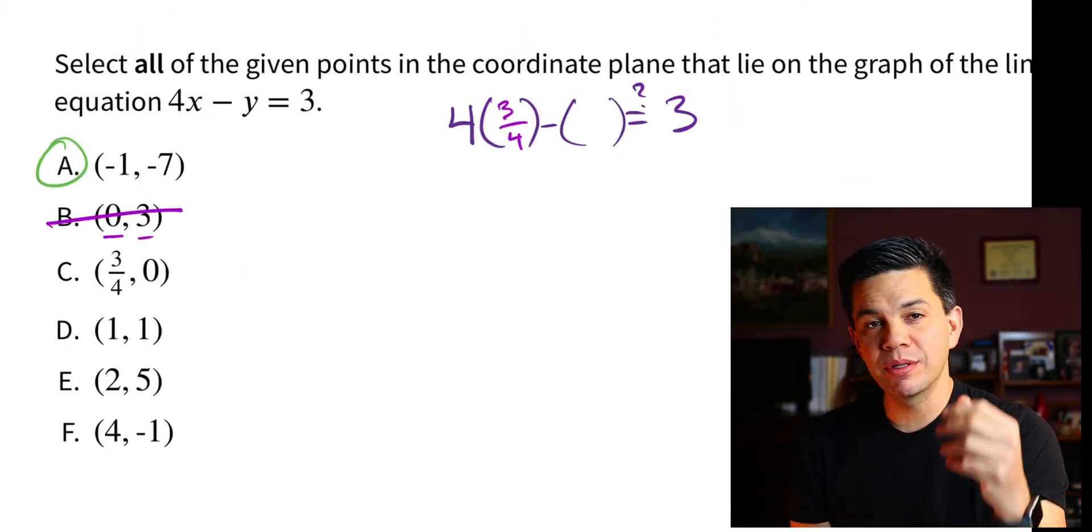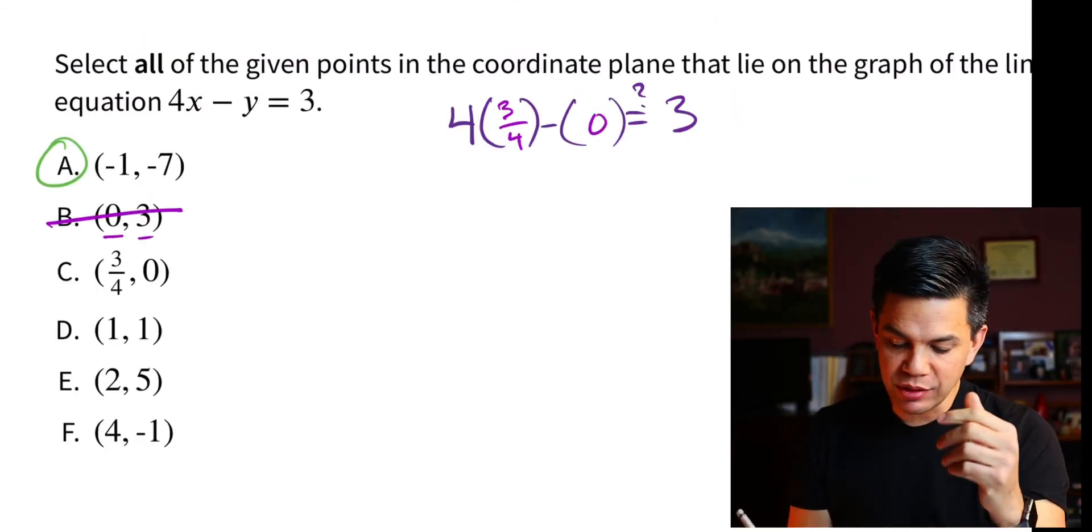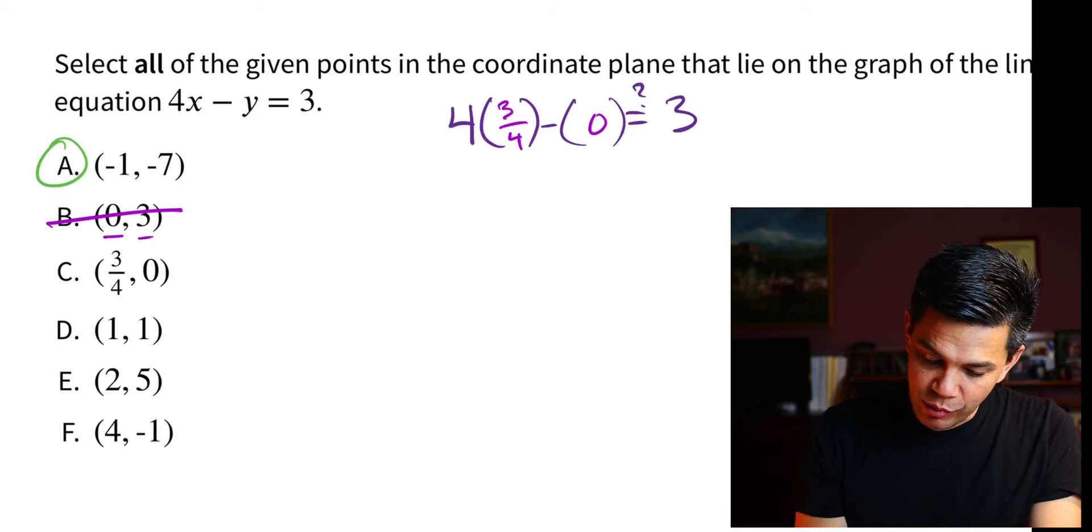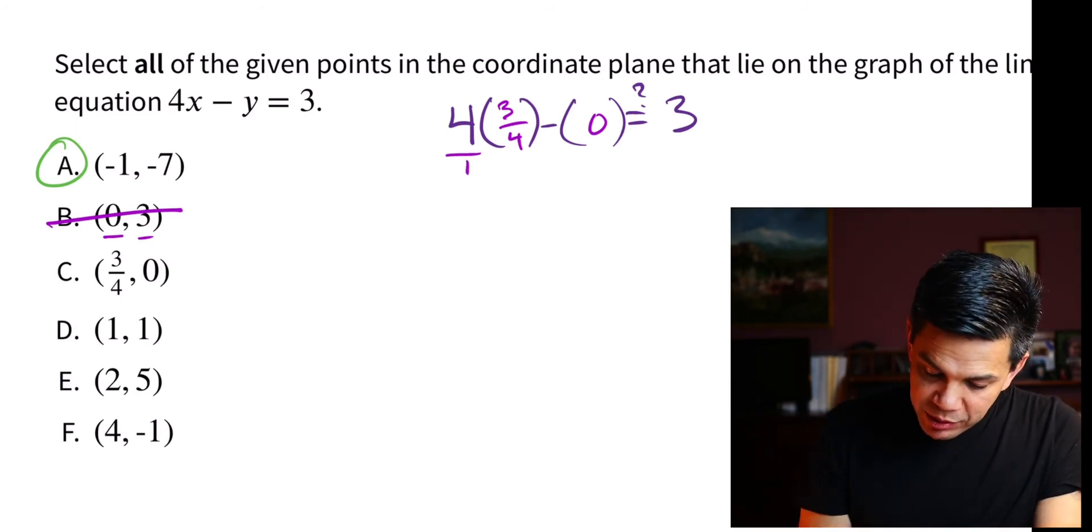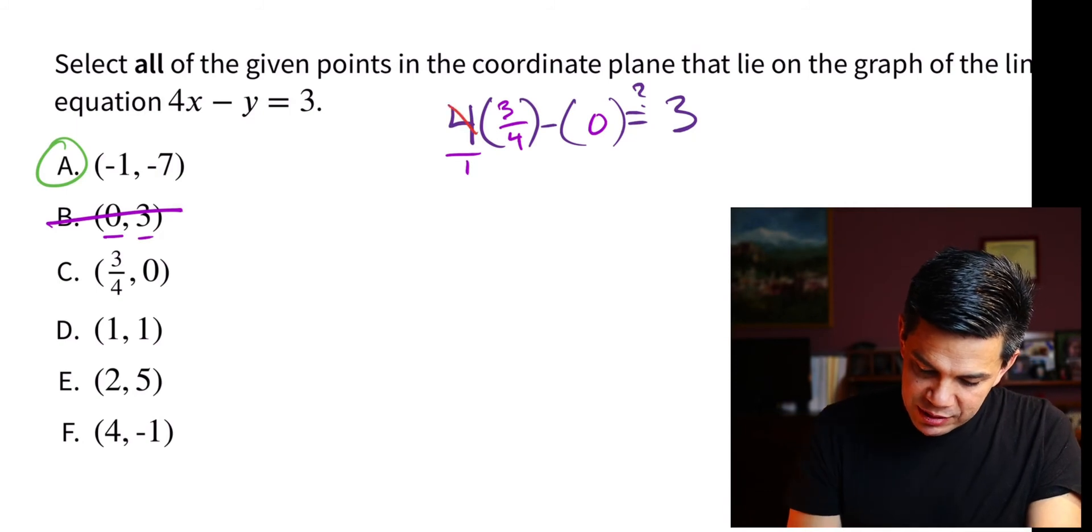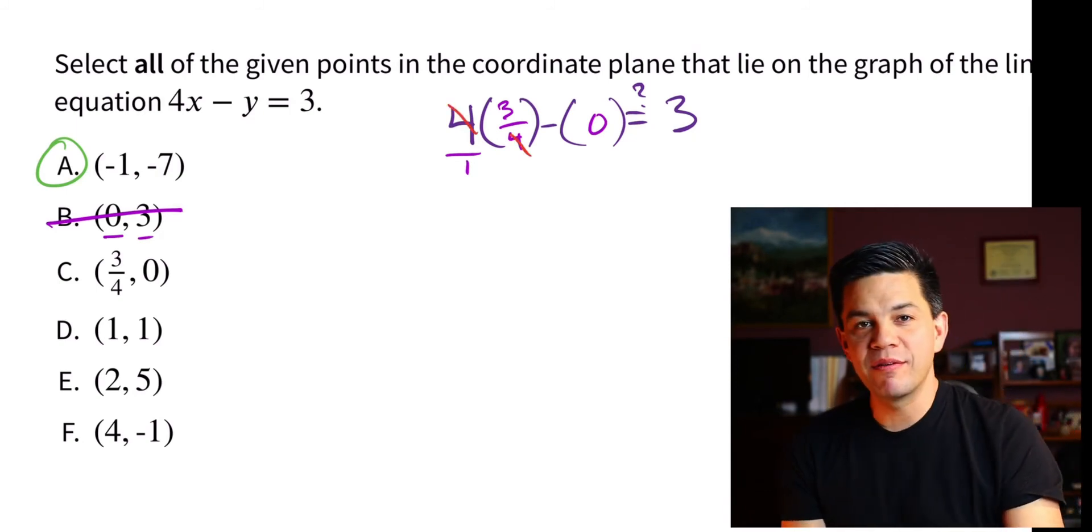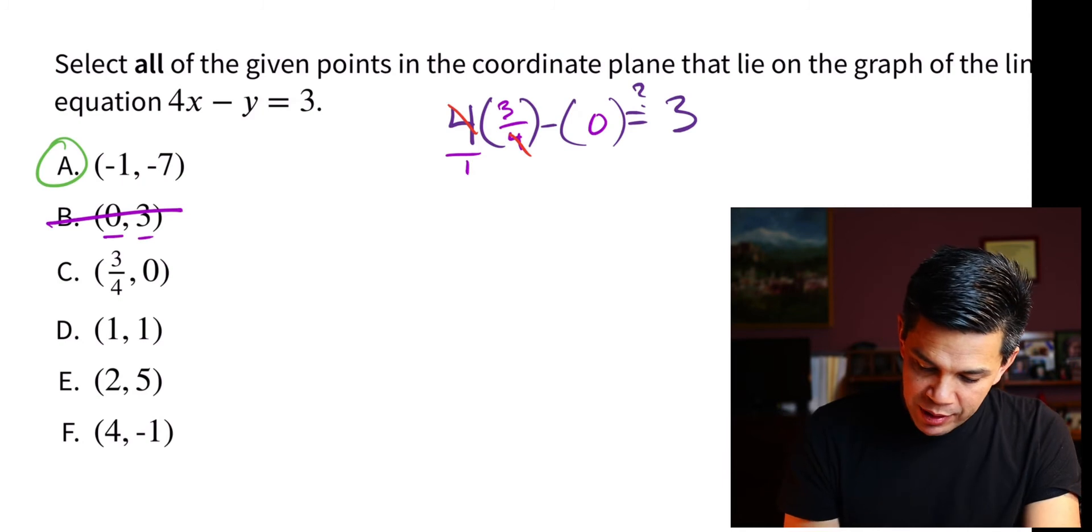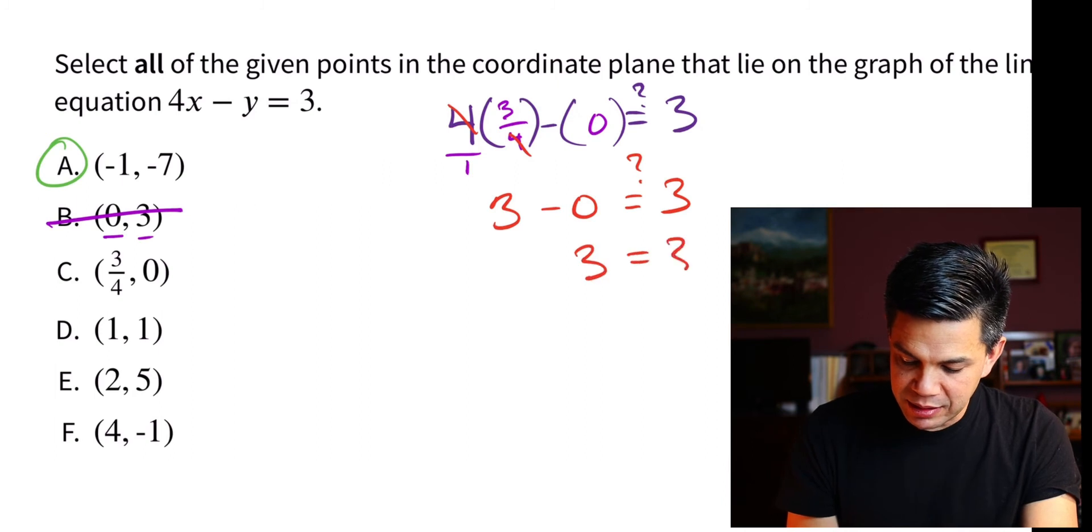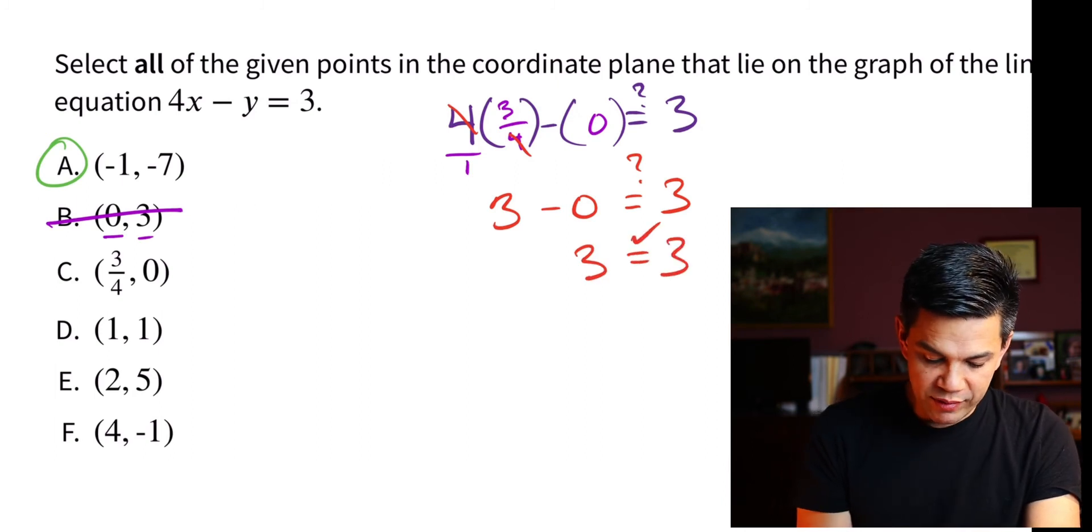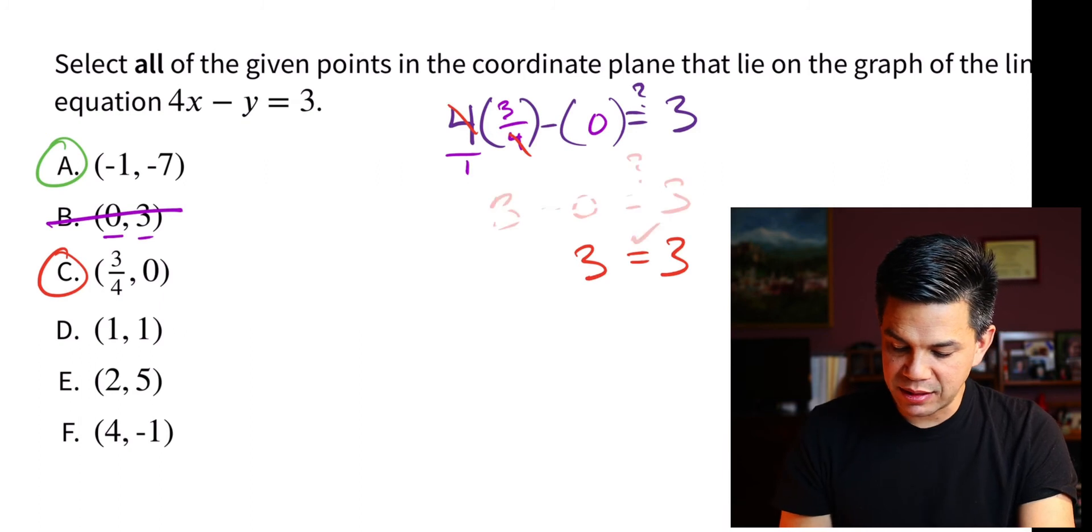For the next one, 3 quarters is our x value, 0 is our y value. Let's take a look at what we have to do here. We have to do some fancy fraction multiplication. And if you see the numerator and denominator both have a 4, you can cancel those out. And you end up with 3 minus 0. Does that equal 3? Indeed, indeed it does. We have another match. C is another match in this case.